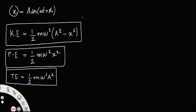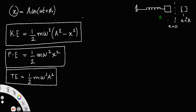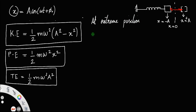Consider the oscillation of a spring. Let the mass m oscillate between two positions. The middle line represents the mean position x = 0, the point x = +A is the positive extreme, and x = -A is the negative extreme. The spring oscillates between these two positions about the mean position.